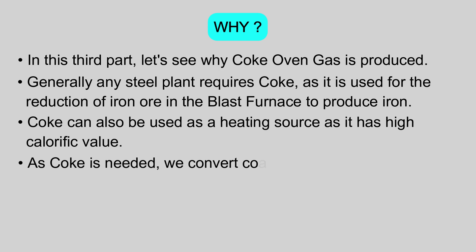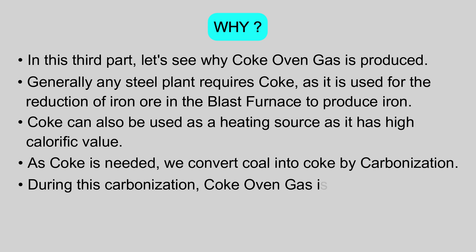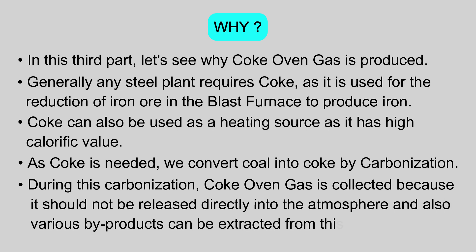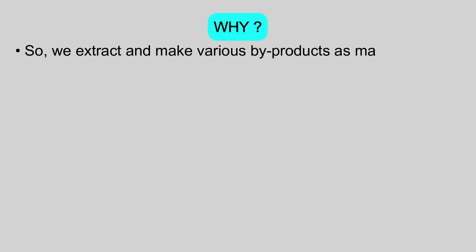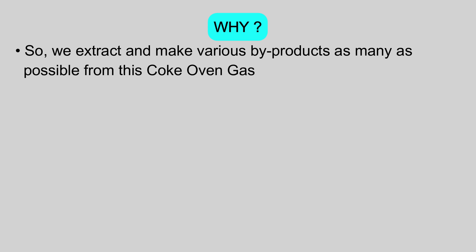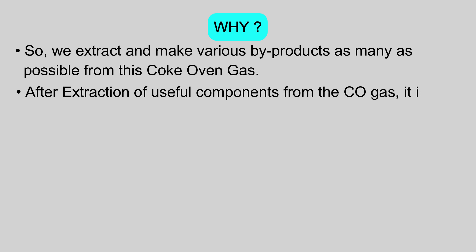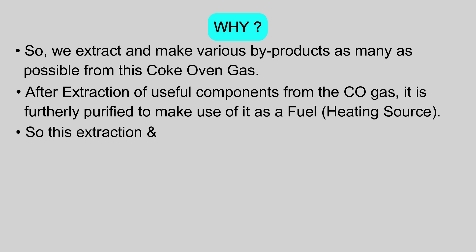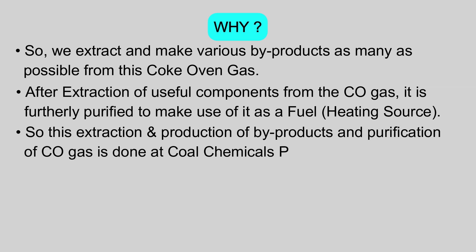As coke is needed, we convert coal into coke by carbonization. During this carbonization, coke oven gas is collected because it should not be released directly into the atmosphere, and also various by-products can be extracted from this gas. So we extract and make various by-products as many as possible from this coke oven gas. After extraction of useful components, the coke oven gas is further purified to make use of it as a fuel. This extraction, production of by-products, and purification of coke oven gas is done at the coal chemicals plant.